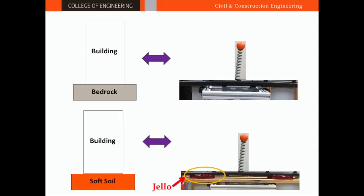Structures built on different soils behave differently. A soft soil, like jello, results in an amplified movement of the building. In this case, the soft soil has affected the structure negatively. Sometimes, it could decrease the structural response and be beneficial.